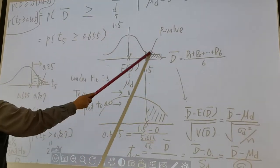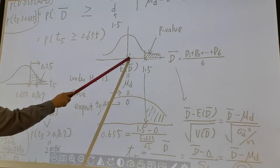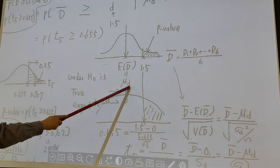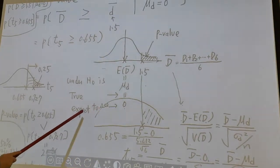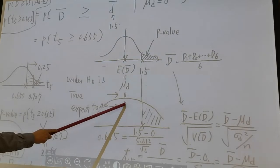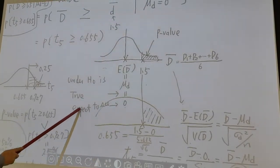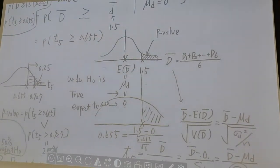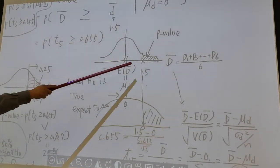So this is normal. The center of the normal distribution, E(d-bar), is μd. Under H₀ is true, we assume summer sessions are useless, zero. So under H₀ is true, what you expect to see, we expect to see zero. However, the collected data shows something different.